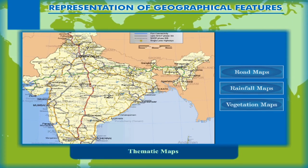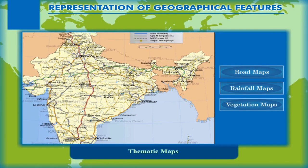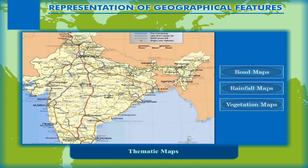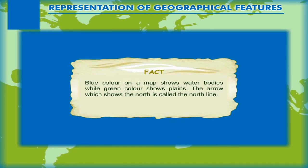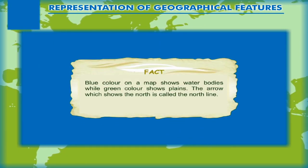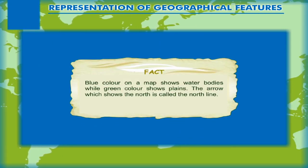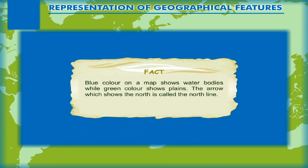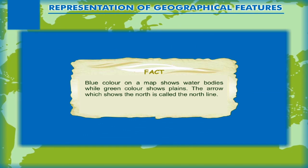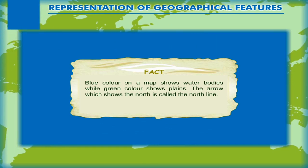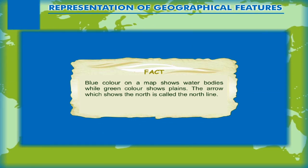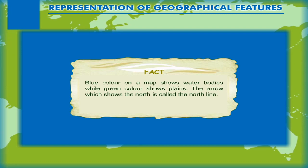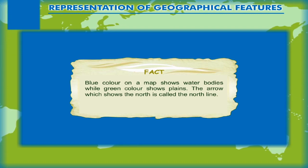As a fact, blue color on a map shows water bodies, while green color shows plains. The arrow which shows the north direction is called the north line.